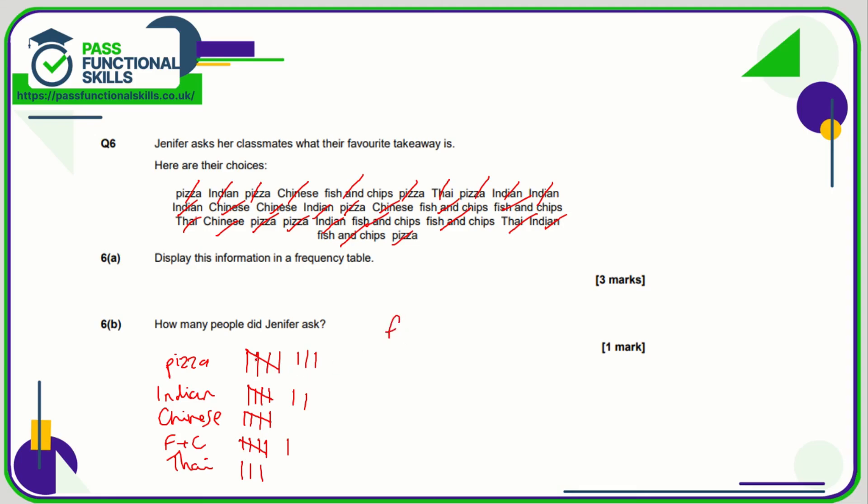Now let's work out our frequency. So that's five plus three, which is eight, five plus two, which is seven, five, five plus one is six, and three. So how many people did Jennifer ask? Well, that's simply eight plus seven plus five plus six plus three, so that is 29 people.